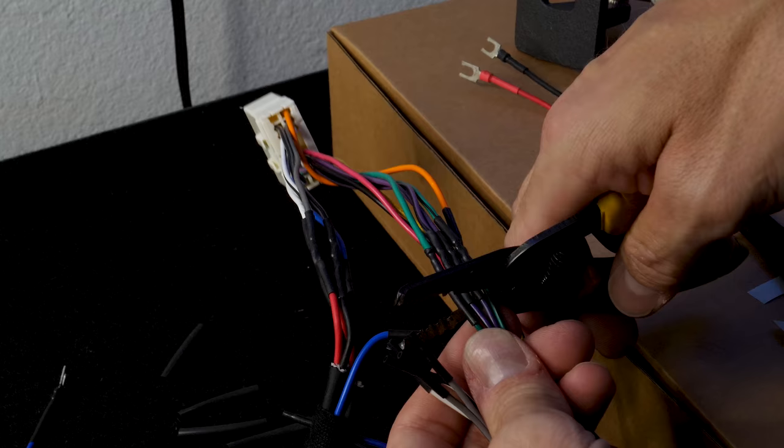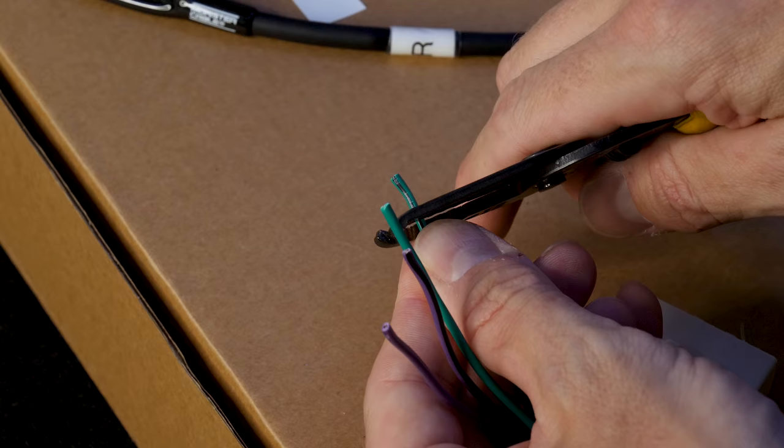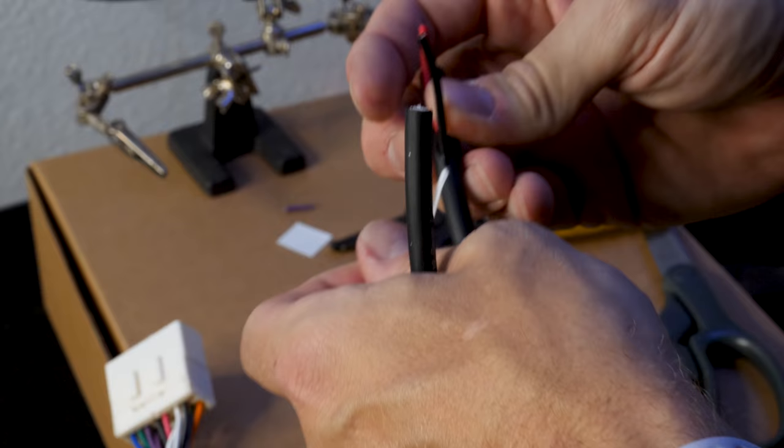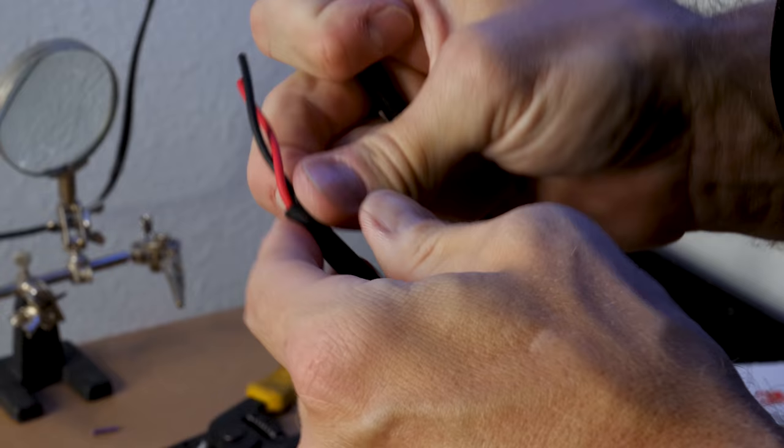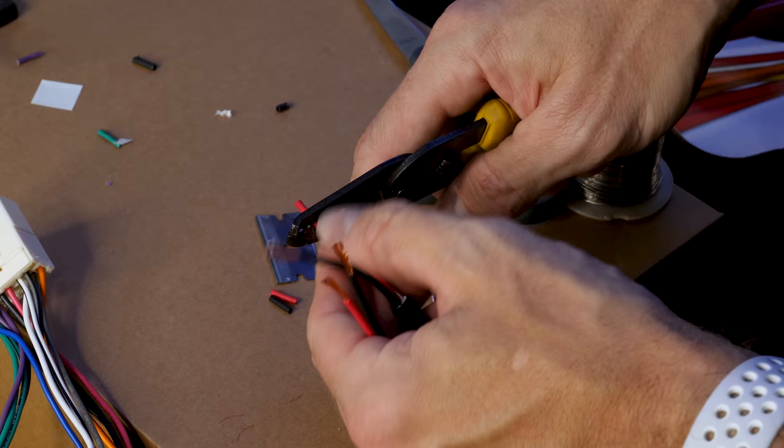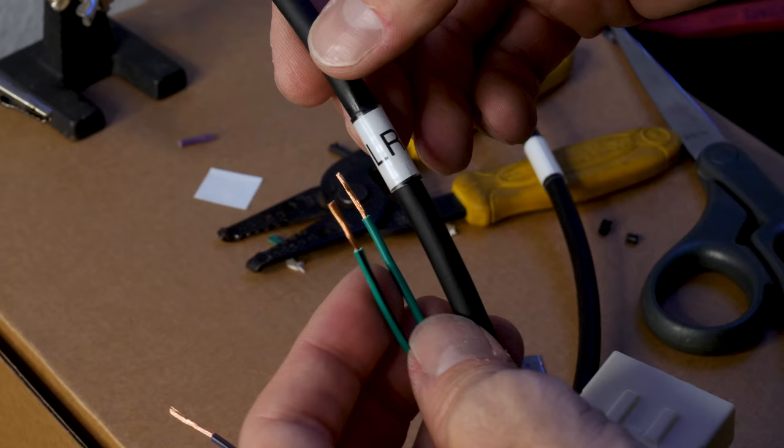We'll cut our rear speaker connections from the aftermarket harness to the Metro harness and then cut the connections to the Metro harness. We'll make sure to use the right cable when making our connections, so green being left rear.